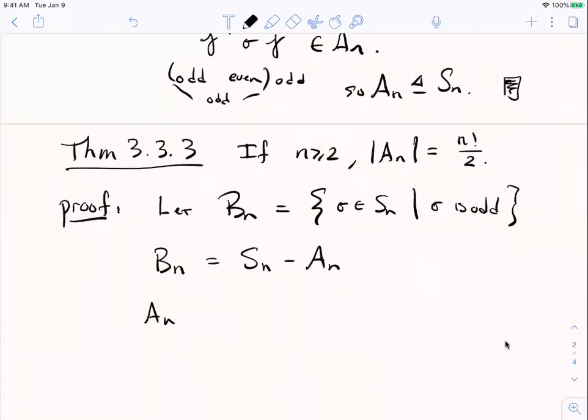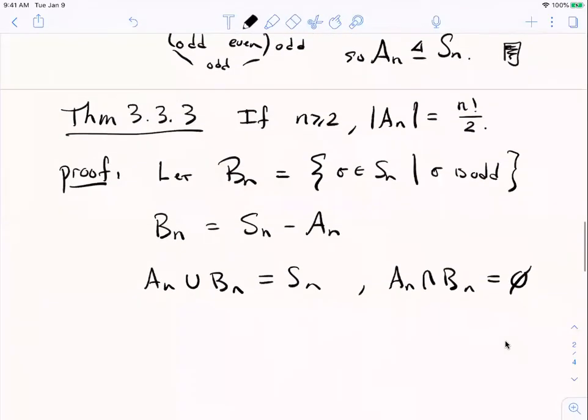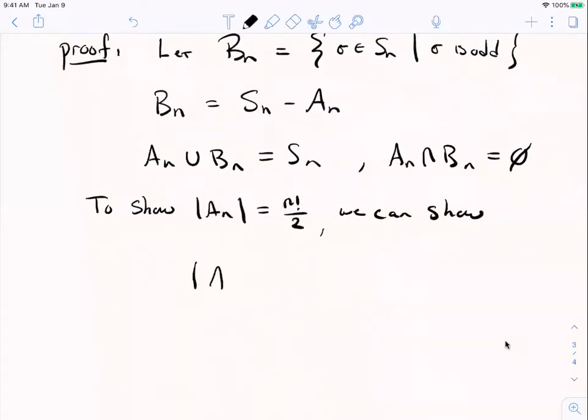So every permutation is even or odd, but not both. So B sub n is really just the complement of A sub n. So what I mean by that is that A sub n together with B sub n account for all permutations and that no permutation is in both of them. Their intersection is absolutely empty. So in order to show that A sub n is half the number of elements, we can just show that A sub n and B sub n have the same number of elements. Yeah. Because if they have the same number of elements together, they make up everything with no overlap. So they would have to have exactly half.